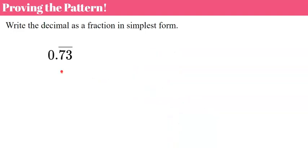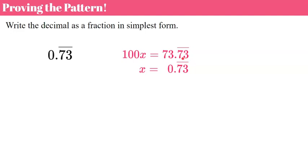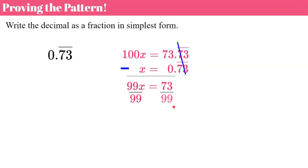Here's how you do it when two digits repeat. Let x equal the repeating decimal. Because two digits repeat, I multiply each side by 100, moving the decimal two spaces to the right: 100x equals 73.73 repeating. Now subtract the original equation — the repeating digits cancel — leaving 100x minus x equals 99x, which equals 73. Divide both sides by 99, and x equals 73 over 99. And there's your repeating decimal written as a fraction.